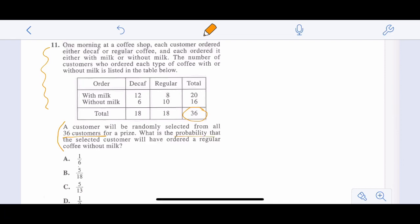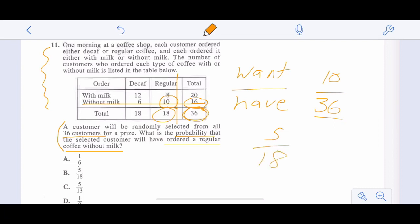Probability is what you want over what you have. So the probability that the selected customer will have ordered regular coffee without milk. What we have is 36, 36 total customers. What we want is without milk, which is this line, and regular, which is this column. So regular without milk is 10 out of 36. Be careful you're not accidentally choosing 18, which is the total regular, or 16, which is the total without milk. That reduces to 5 out of 18, which is choice B.